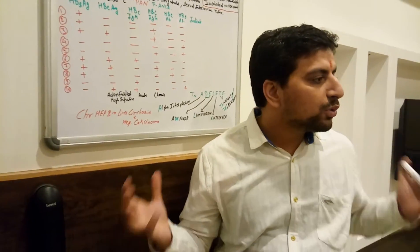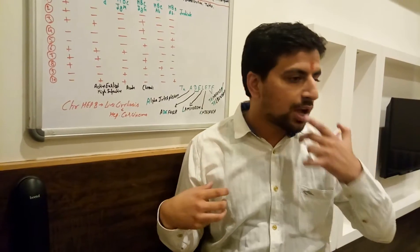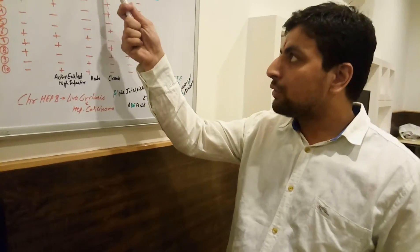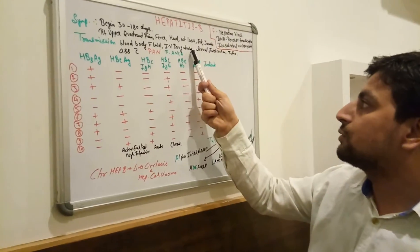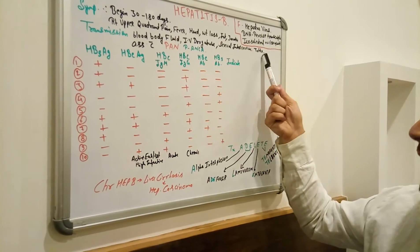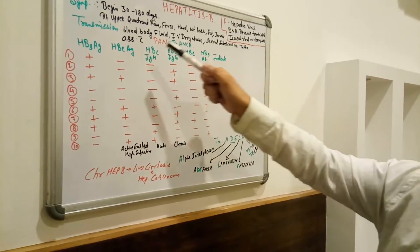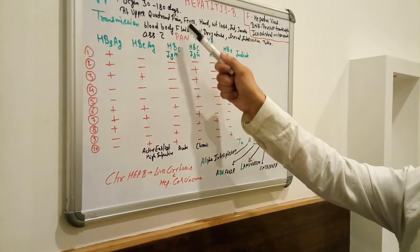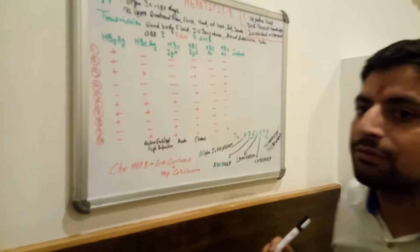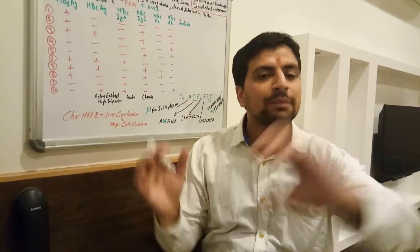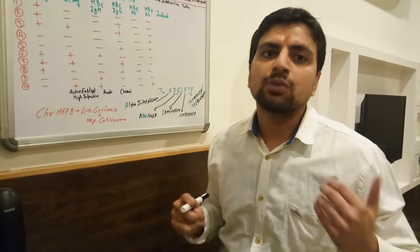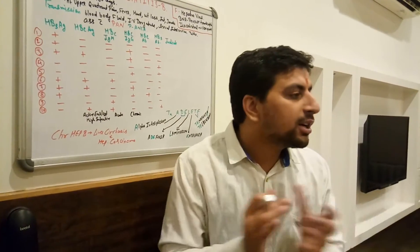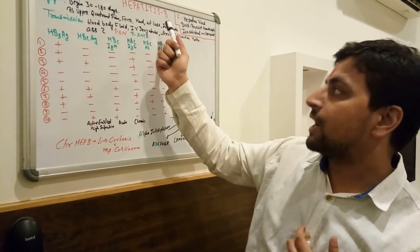Now let's discuss how this virus transmits. This virus transmits through blood and body fluids, IV drug use, sexual intercourse, and tattoos. This virus is also found in polyarteritis nodosa, which is a vasculitis. Polyarteritis nodosa is always associated with Hepatitis B virus.